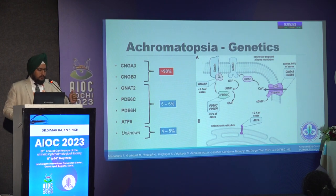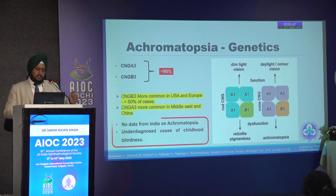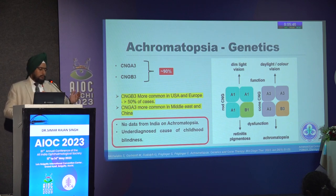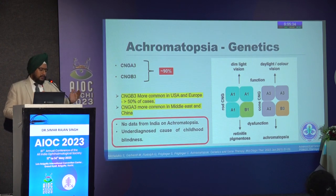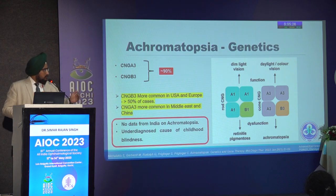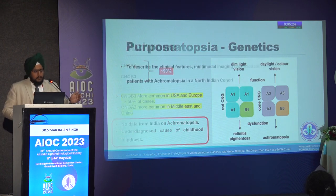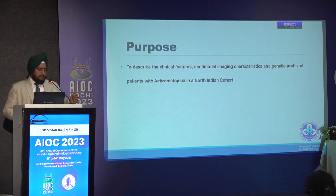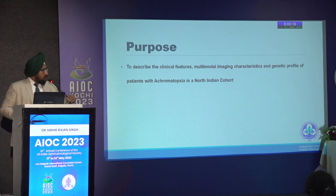Achromatopsia is caused by six genes, of which CNGA3 and CNGB3 — the cyclic nucleotide gated channel genes — are the most common, causing up to 90% of cases. Western literature reports CNGB3 as the most common cause, while the Middle East and China report CNGA3. There is absolutely no data on achromatopsia from India, and it is an underdiagnosed cause of childhood blindness. The purpose of the study was to describe clinical features, multimodal imaging characteristics, and genetic profile of achromatopsia patients in a North Indian cohort.